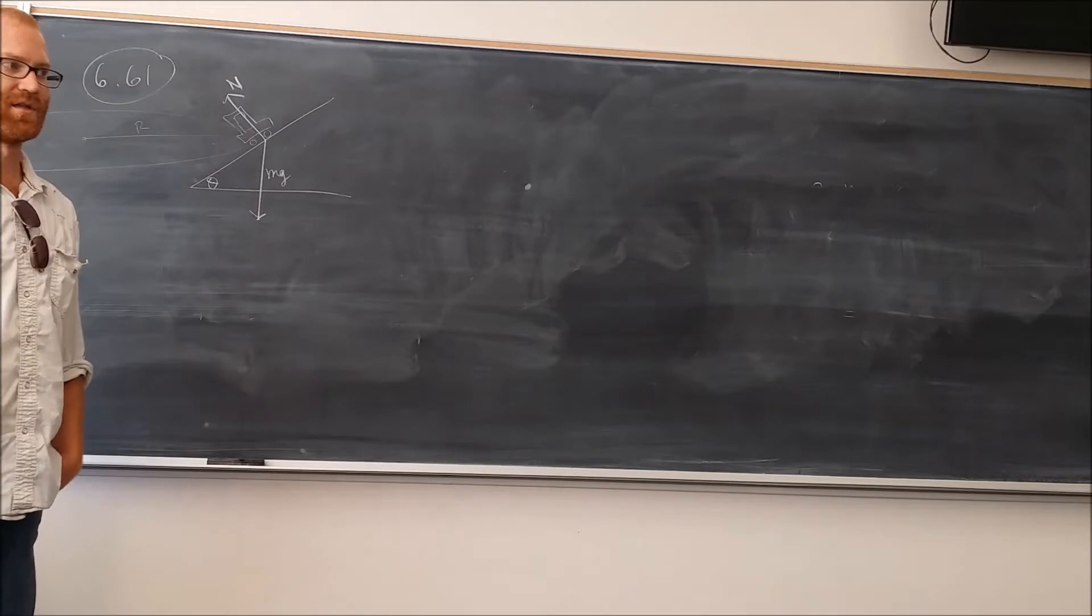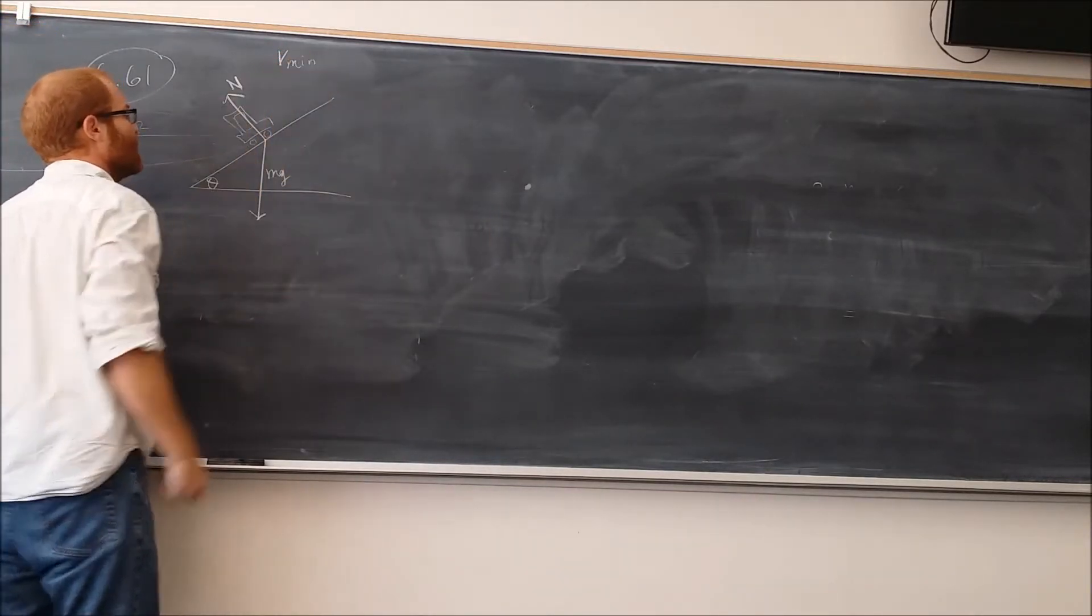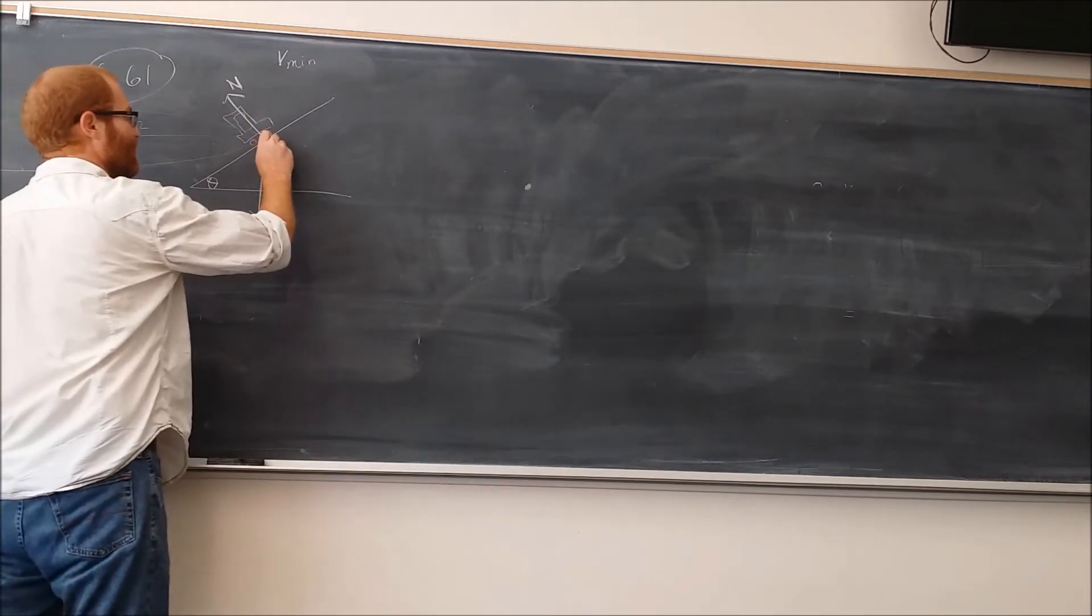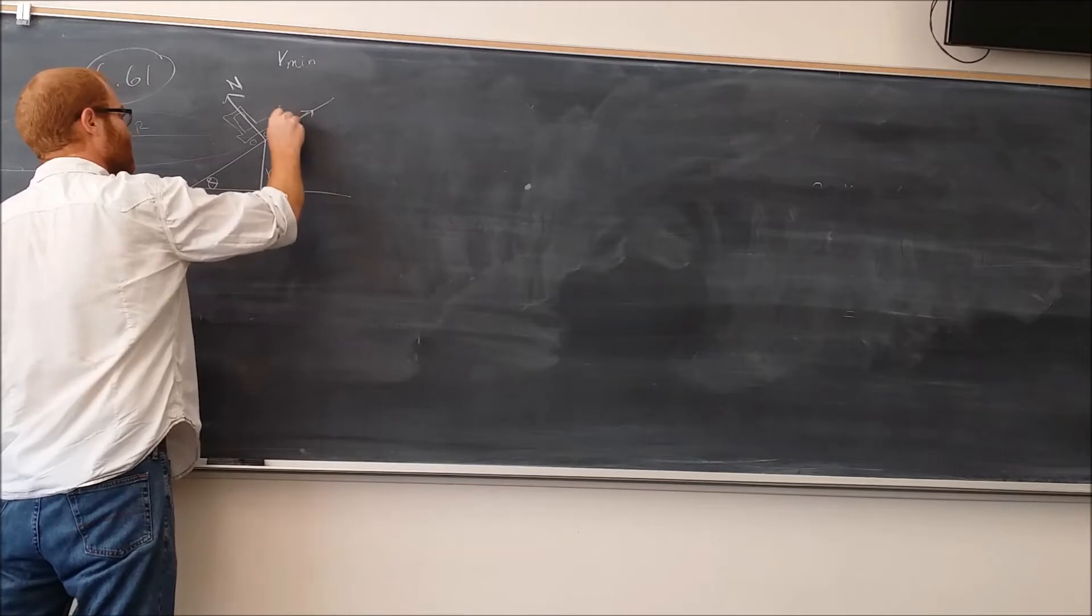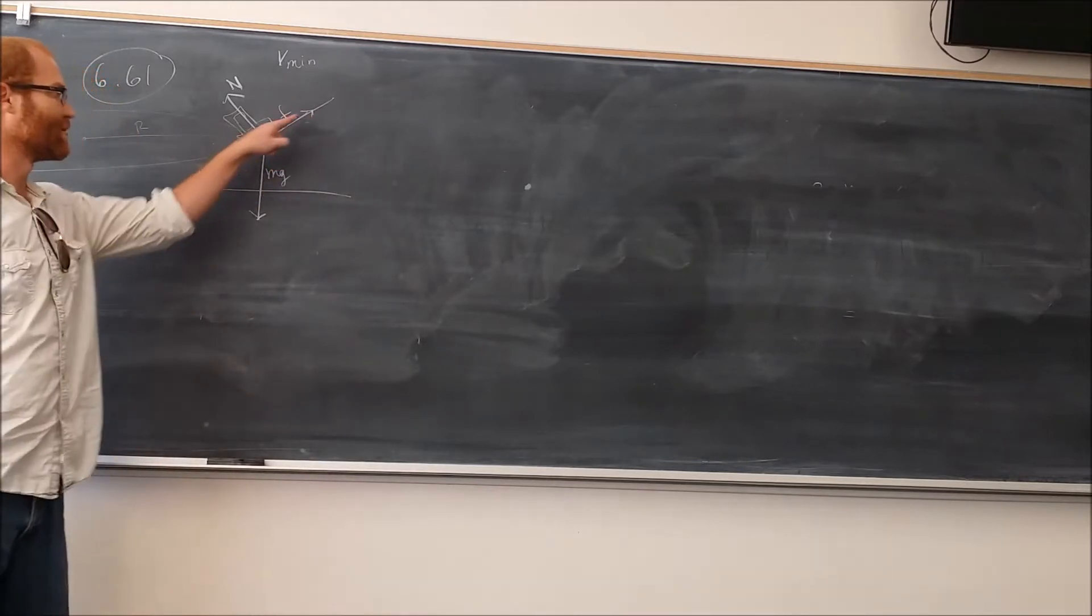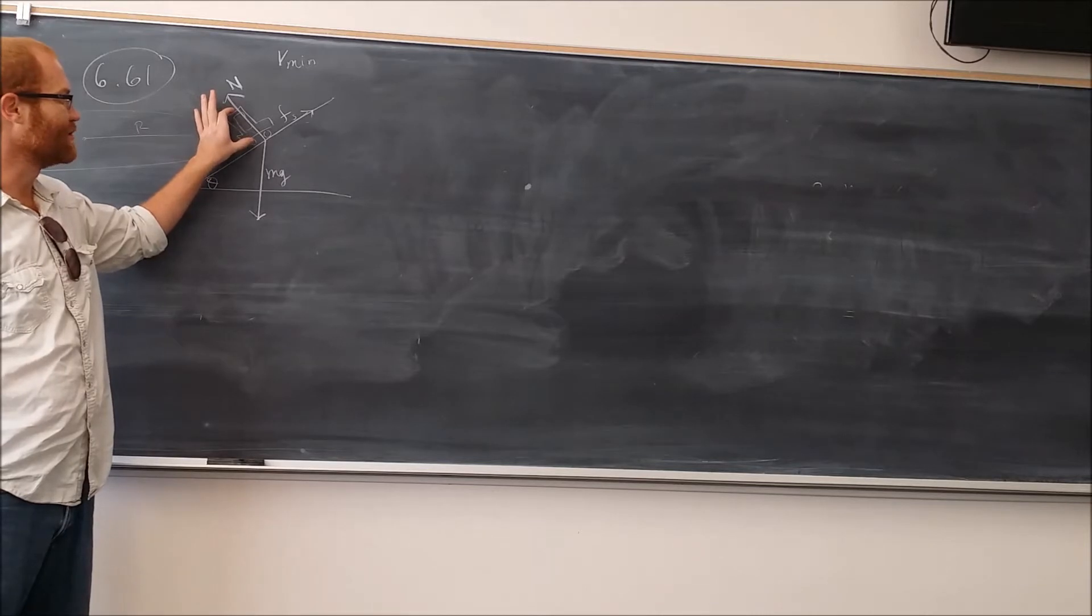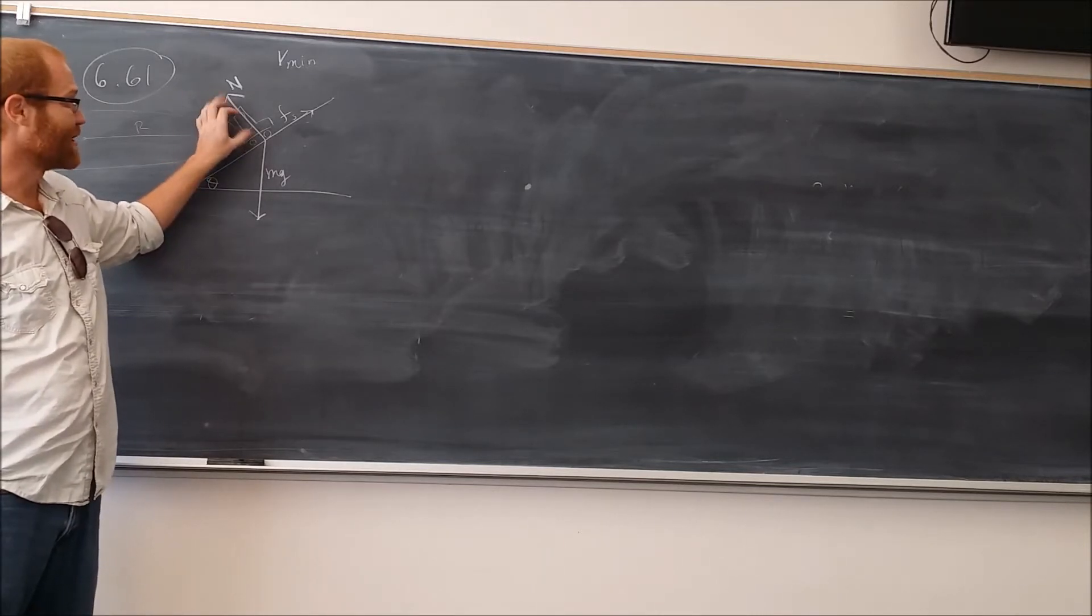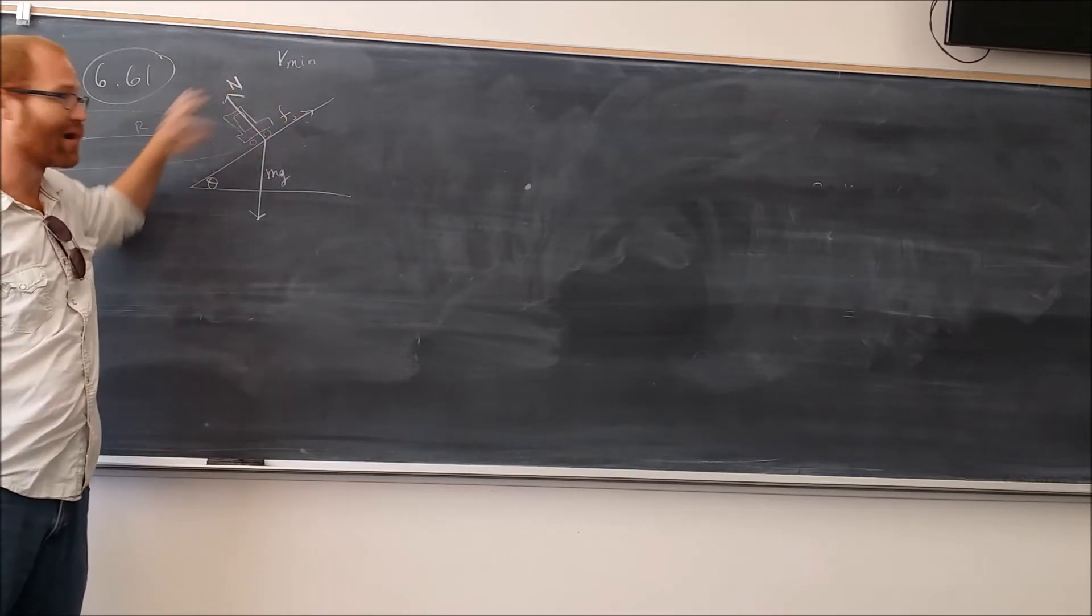Now, we can either find the minimum speed or the maximum speed. First, we'll start off by doing the minimum speed. For the minimum speed, we're going to have the friction force pointing up this way. The reason the friction force is going to point this way is because the minimum speed would be the speed such that the car needs to, the speed the car needs to have in order to not slip back down the ramp this way, which means the friction force is going to point in the opposite direction to hold the car there.